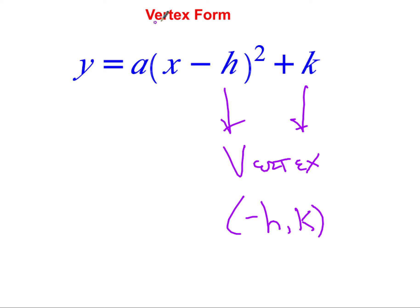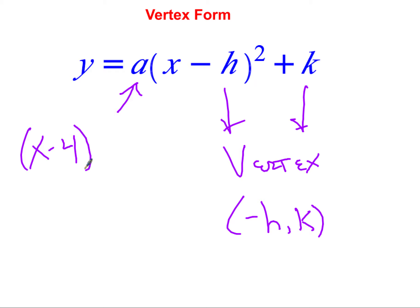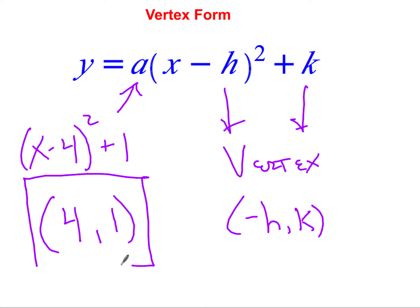In vertex form, the value of a changes the shape of the U — we'll talk about that later. For now, using h-k form, we find the vertex of the parabola and graph from there. For example, if I have y equals (x minus four) squared plus one, the vertex is at positive four and one, because we take the opposite of whatever is inside the parentheses with x.